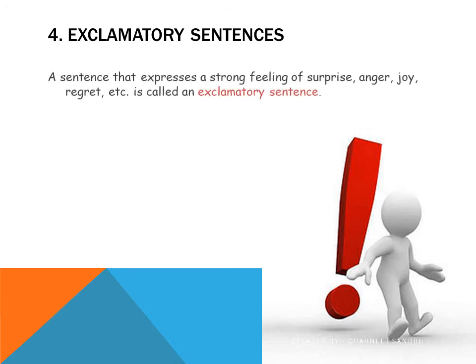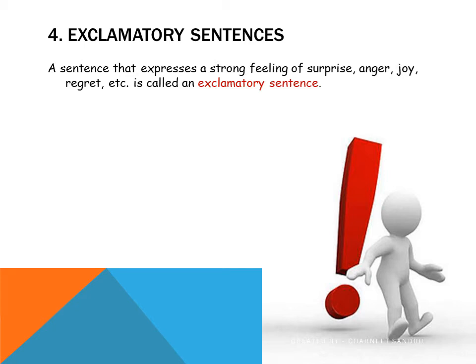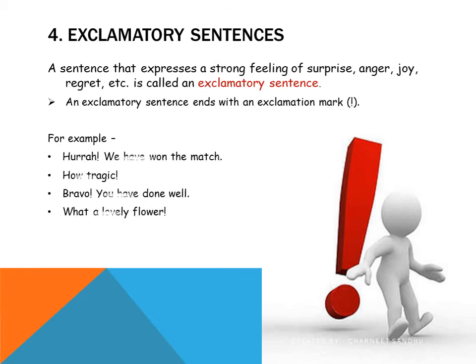Exclamatory sentences. These sentences are really easy to identify because they end in an exclamation mark. A sentence that expresses a strong feeling of surprise, anger, joy, regret, etc. is called an exclamatory sentence. For example: Hooray! We won the match. How tragic. Bravo! You have done well. What a lovely flower. So all these sentences express a strong feeling of surprise, anger, joy, regret, sorrow, etc., and fall under the category of exclamatory sentences.